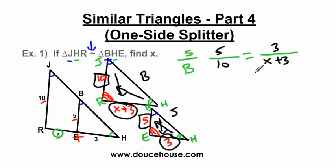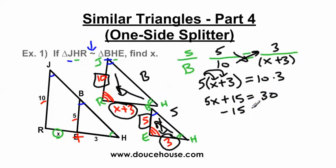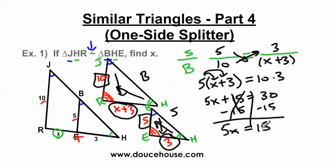Now I can cross-multiply and solve for X. Whenever I have more than just a number — like X plus 3 — I put parentheses around it to help solve the proportion. Cross-multiplying: 5 times (X plus 3) equals 10 times 3. Distributing: 5X plus 15 equals 30. Subtracting 15 from both sides gives 5X equals 15. Dividing both sides by 5, X equals 3.